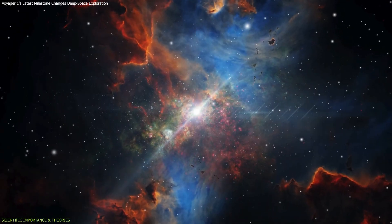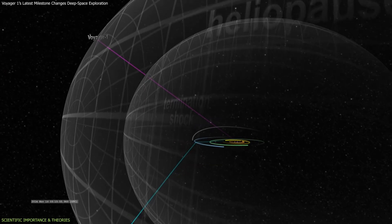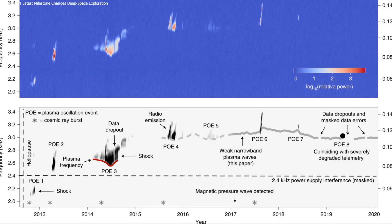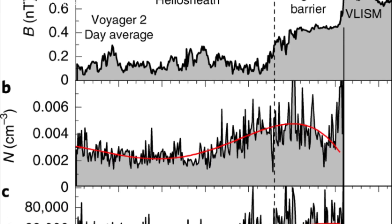One of the most important findings so far is the variability of the interstellar environment. Early models depicted this region as relatively stable, but Voyager has recorded fluctuations in plasma density and magnetic field orientation.